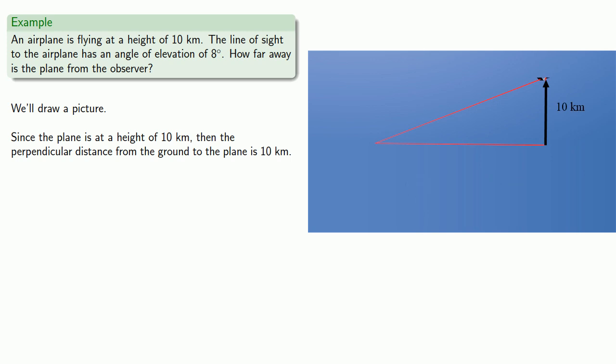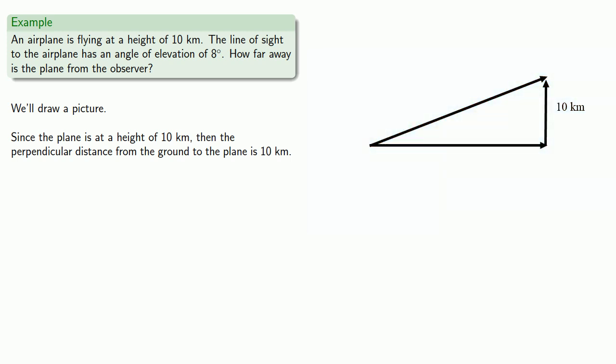We have the line of sight from the observer to the airplane, and we also have a horizontal line. This gives us our right triangle. Since the angle of elevation is 8 degrees, we know that the angle between the line of sight and the horizontal has a measure of 8 degrees. If it's not written down, it didn't happen, so let's write that in.